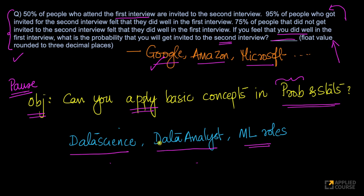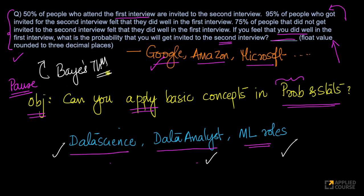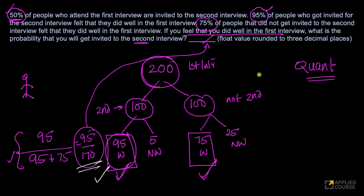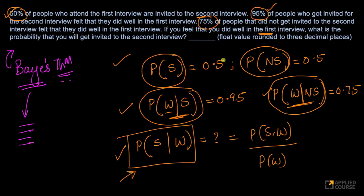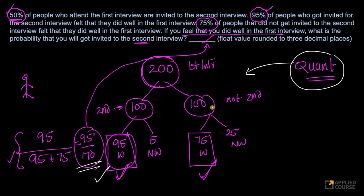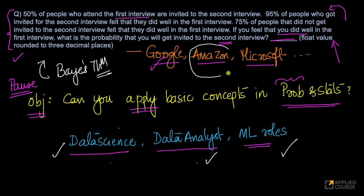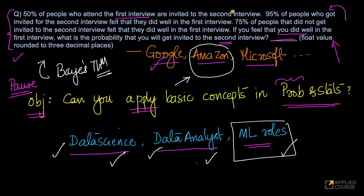In many interviews for data science, data analyst, and machine learning roles, you will encounter problems where you have to apply Bayes' theorem. These are very standard problems. You can solve them by treating it as a pure quantitative problem, or by applying conditional probability and Bayes' theorem — either way is fine, as long as you can apply basic probability concepts to solve real-world problems. Hiring managers specifically request that at least one Bayes' theorem question be asked in the interview loop.